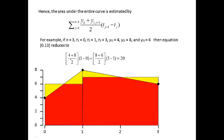For the first rectangle: (4 + 8) / 2 gives the average height, and the bottom length is 1 minus 0. For the second: (8 + 6) / 2 is the average between the points 8 and 6, giving the height, multiplied by the length 3 minus 1. You add them up and get 20, which is the area under the curve — AUC.